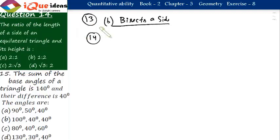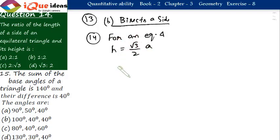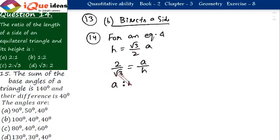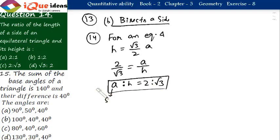Question number 14: the ratio of the length of a side of an equilateral triangle to its height. For an equilateral triangle, height h equals (√3/2) times the side a. So, side a to height h equals 2 to √3. The required ratio is 2:√3.